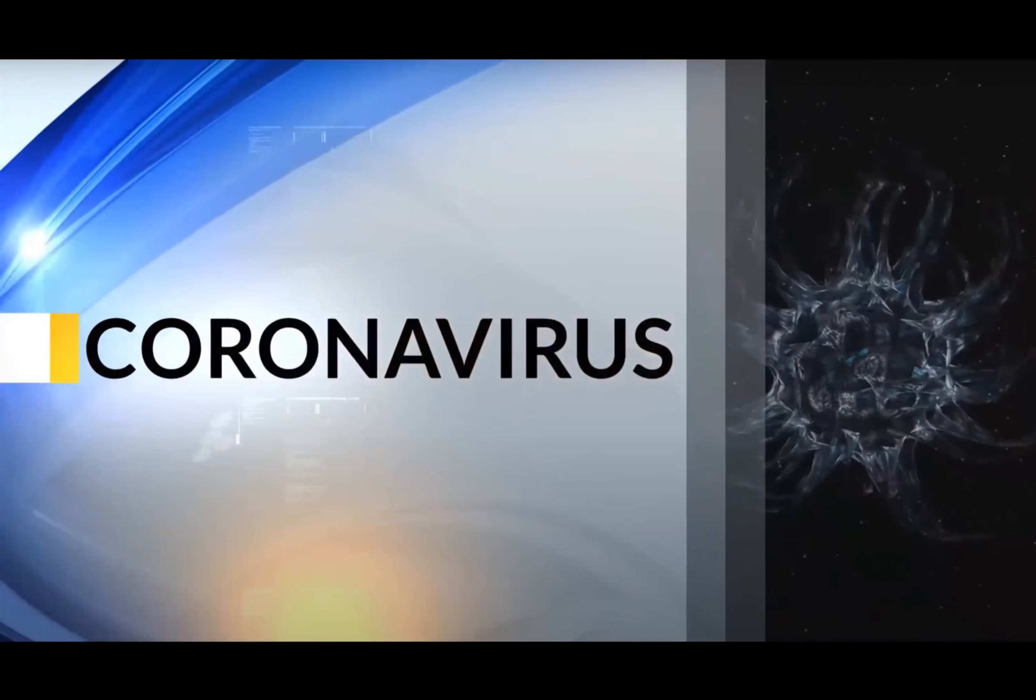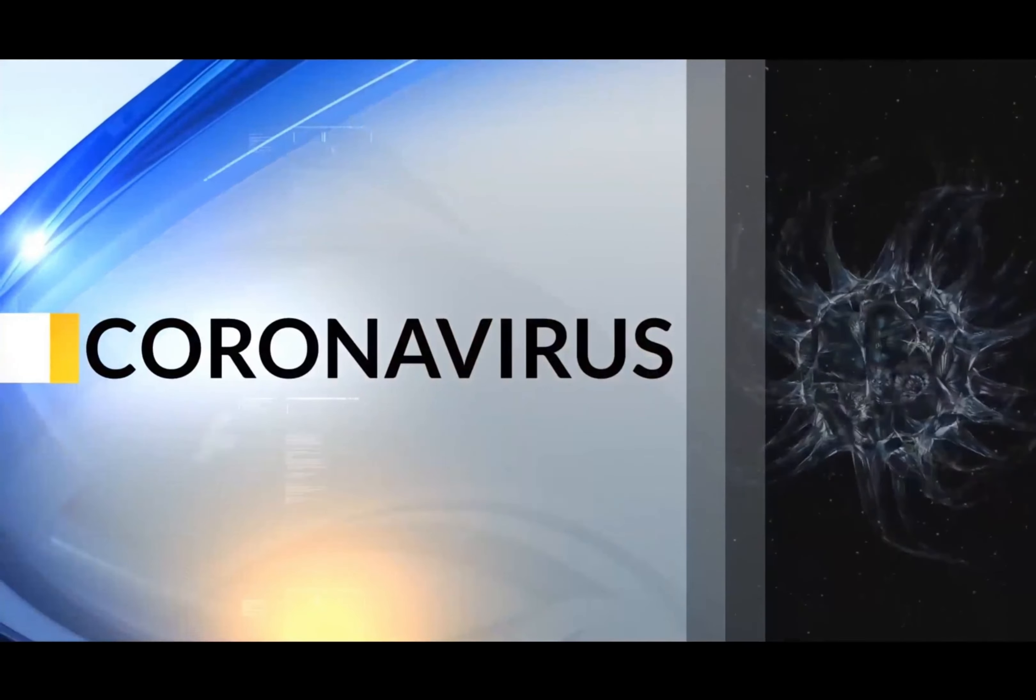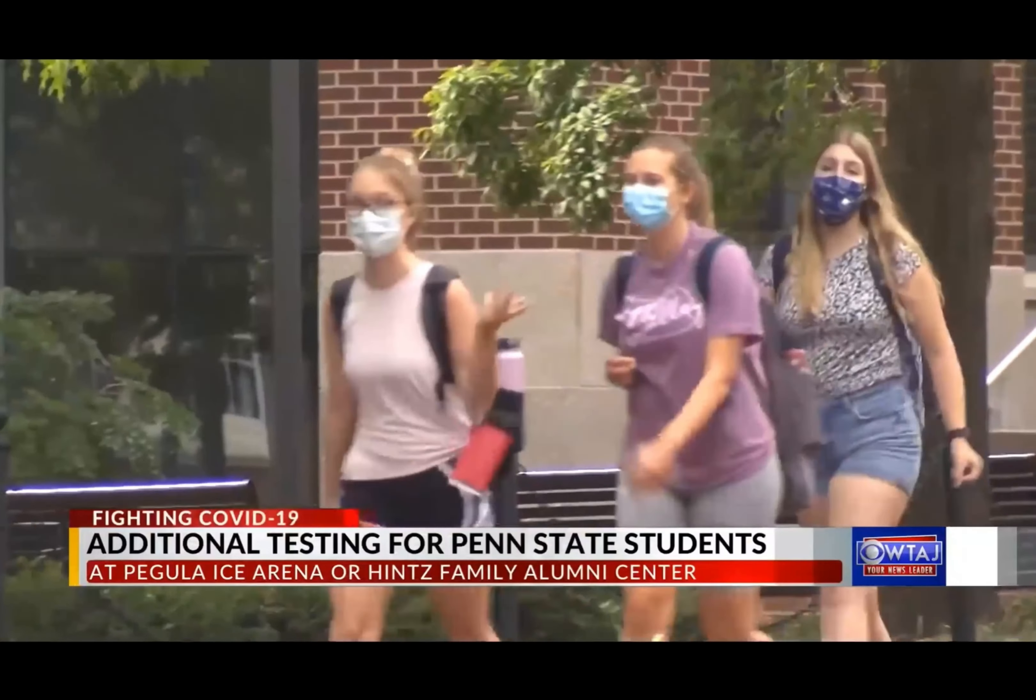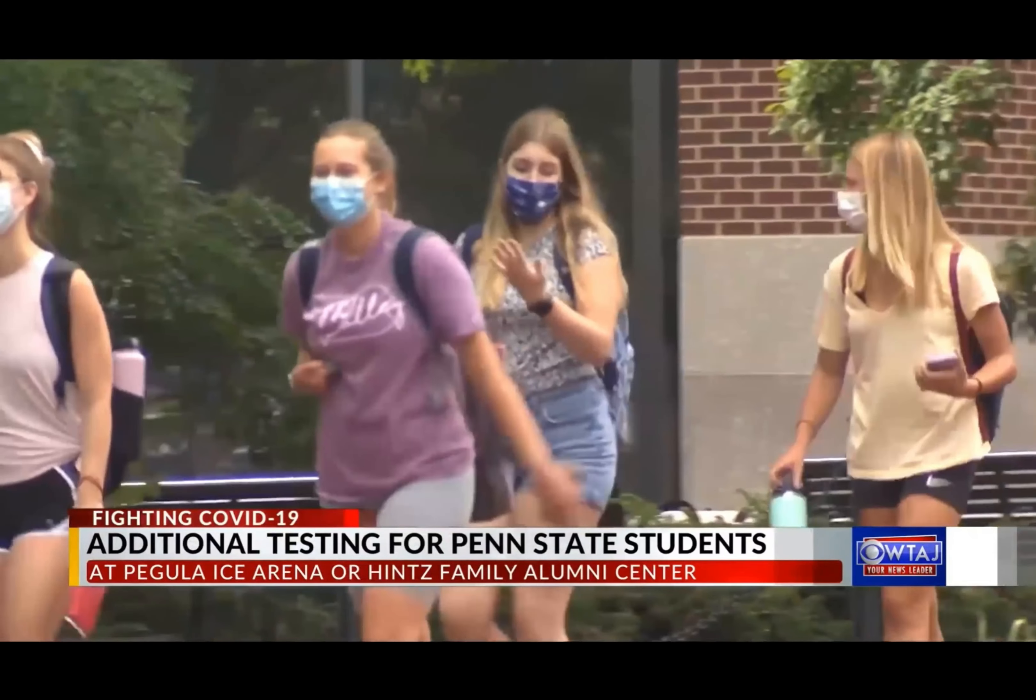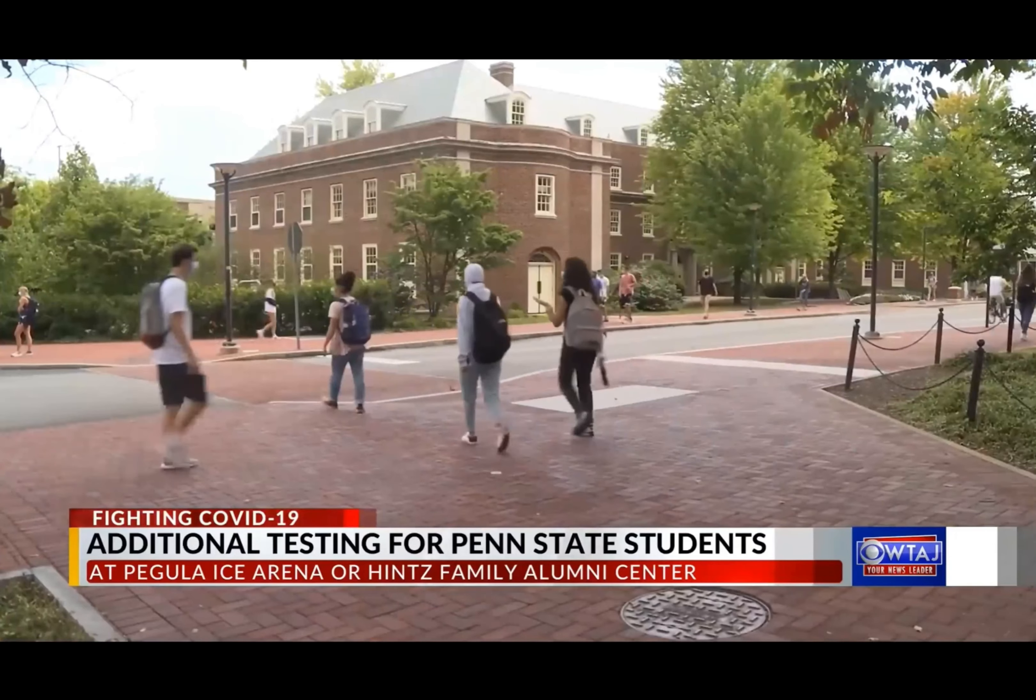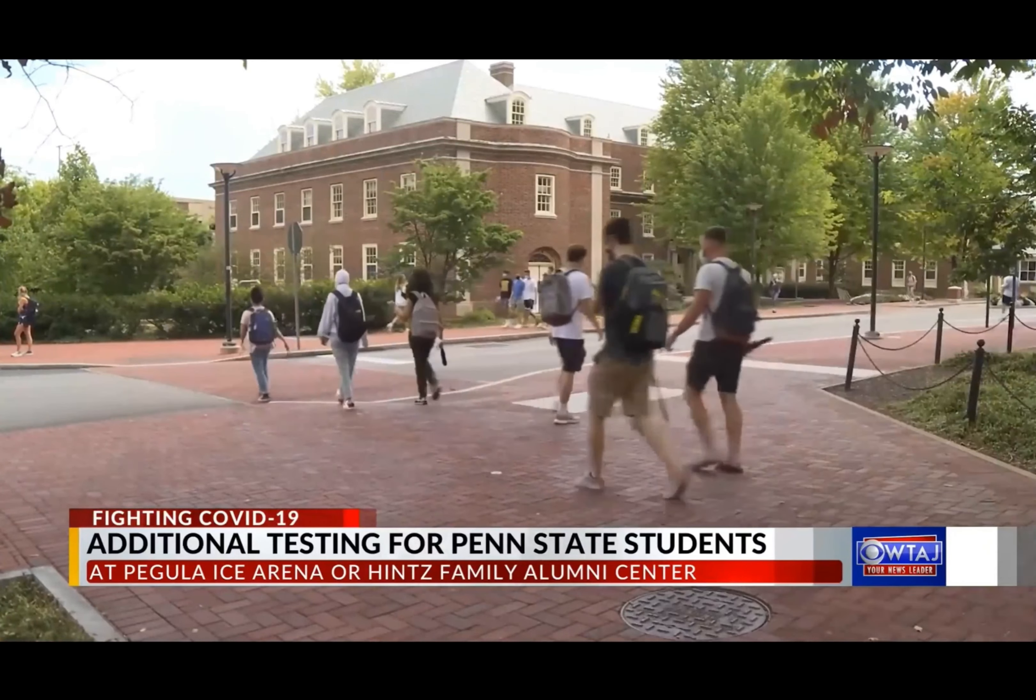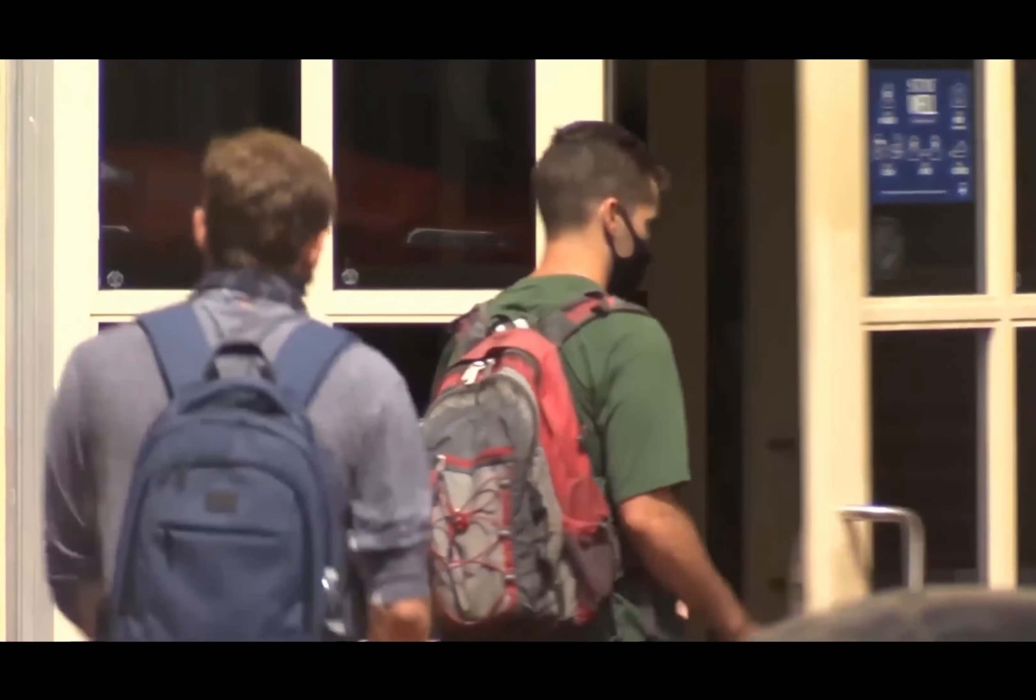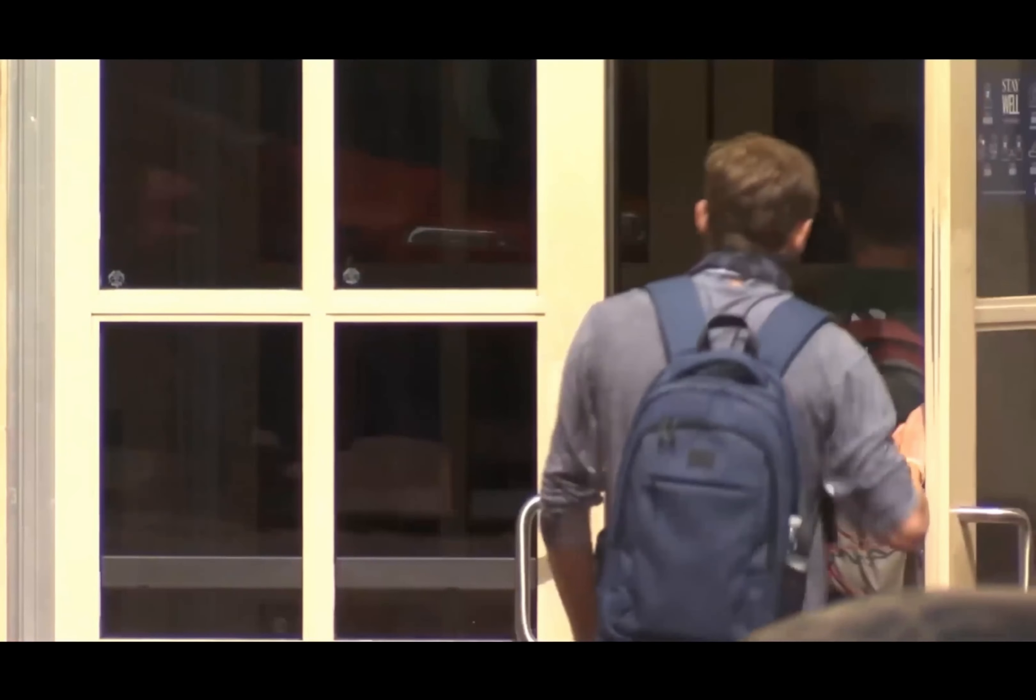The first example of random sampling is coronavirus testing. During the year of 2020 and 2021, Penn State University set up testing sites for students at Pegula Ice Arena or Hintz Family Alumni Center. Students are randomly drawn from the population to test the spread of the virus across campus. This helps decision making to open or close the campus.